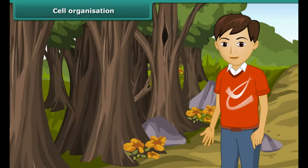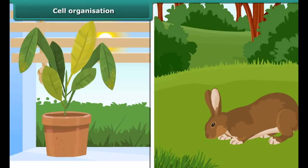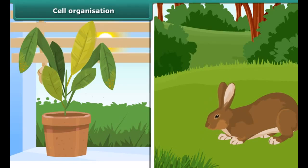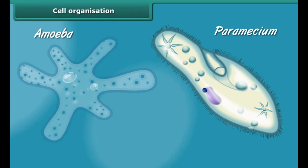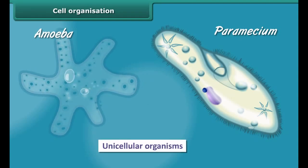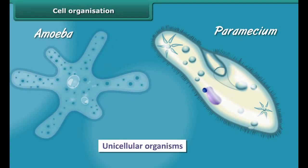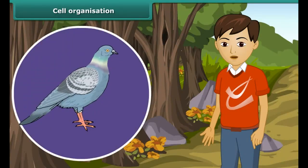All living organisms, plants or animals, are comprised of cells. They may be unicellular or multicellular depending on the number of cells in their body. Small organisms like amoeba and paramecium are made up of one cell and are called unicellular organisms. Human beings, pigeons, and mango trees are made up of many cells, so they are called multicellular organisms.